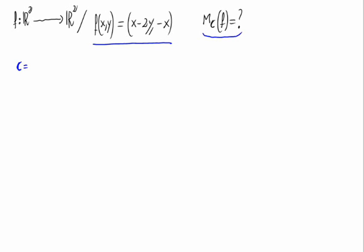As we know, the canonical basis of R square is (1, 0) and (0, 1). And we are asked to calculate the matrix from the canonical basis. Let me remind you that if we write just c, this means that we are considering c as the initial and the final space.